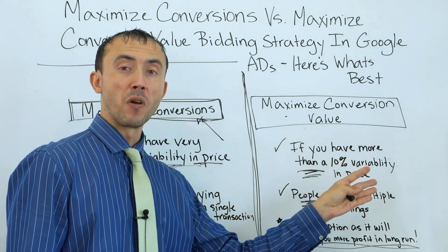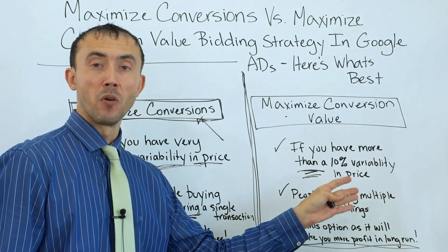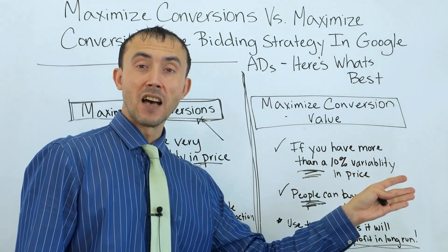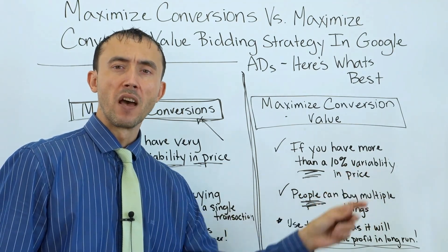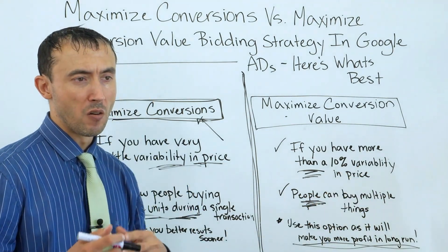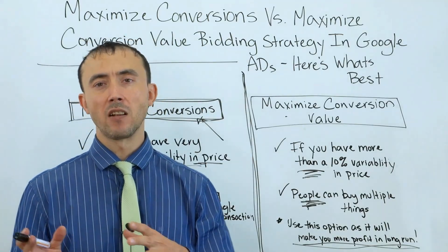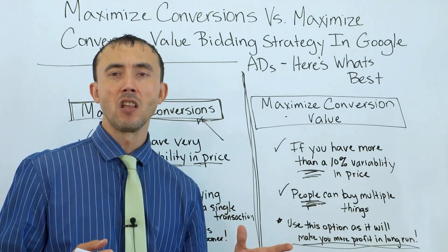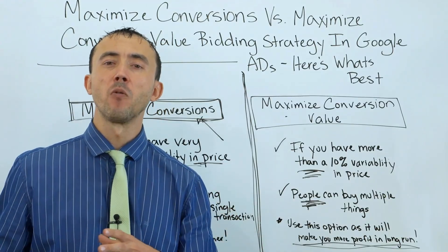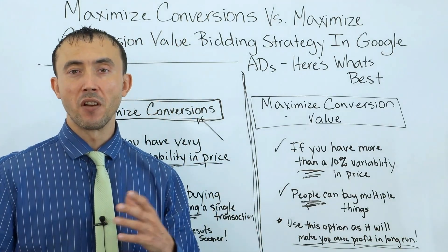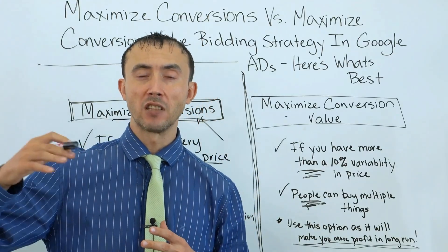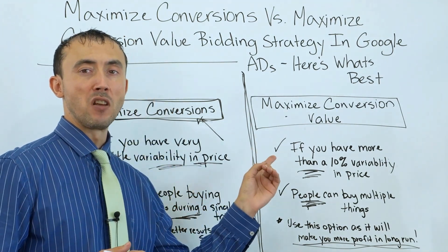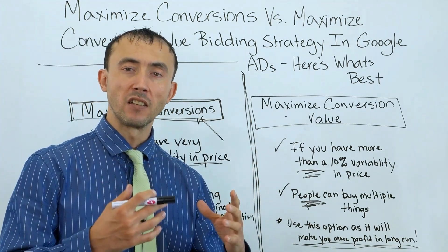The more variability in the price of your items and the higher the percentage of people buying more than one item, the more critical this becomes. If you're not optimizing for people who buy more than one item, the algorithm is going to actively un-optimize you for those customers because it won't see them — people who usually buy more than one item take longer to buy, so they fall outside the conversion window. You have to utilize the bidding strategy that takes advantage of the data you're collecting.